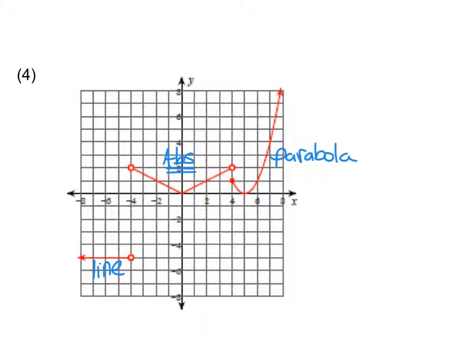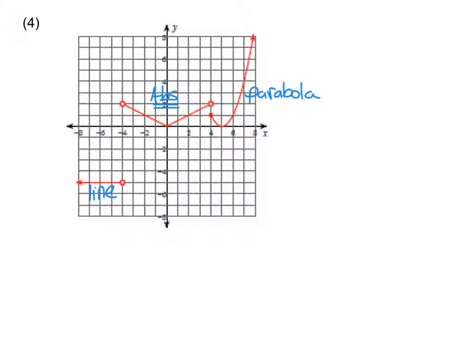When it comes to developing my piecewise function, I need three pieces. So f(x) is going to be equal to my three components — I need the equation for each one of them. I'll start off with the line. What is the equation of that line? y equals negative 5. We're just going to put in the negative 5.